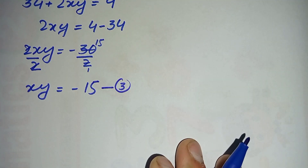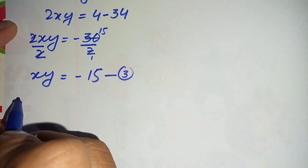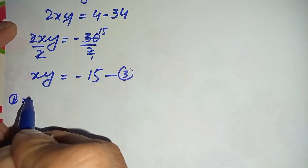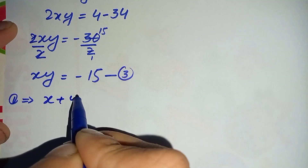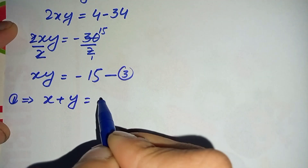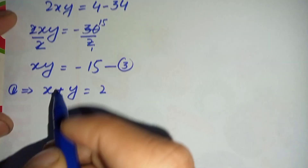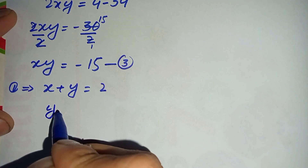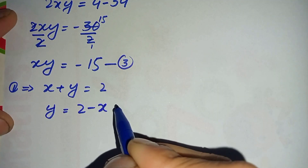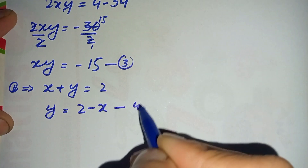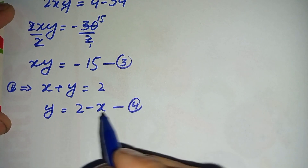Now we will use equation number one again: x plus y is equal to 2. Here we will shift x to the right hand side, so this becomes y is equal to 2 minus x. Let us suppose this is equation number four.